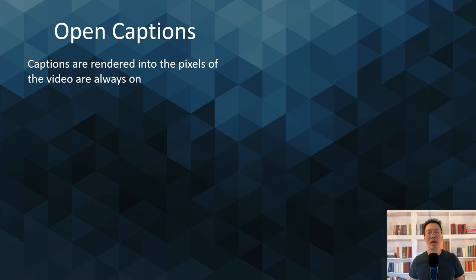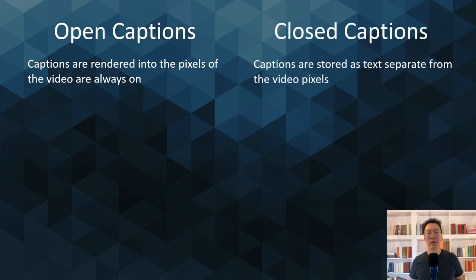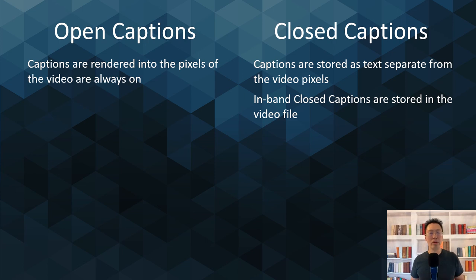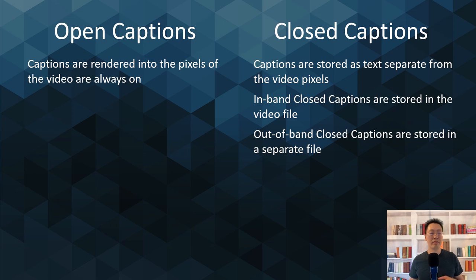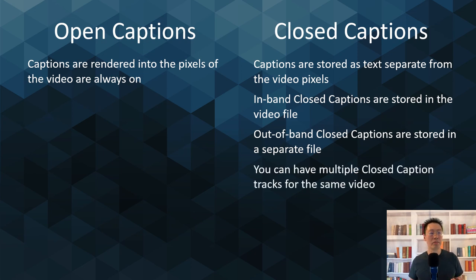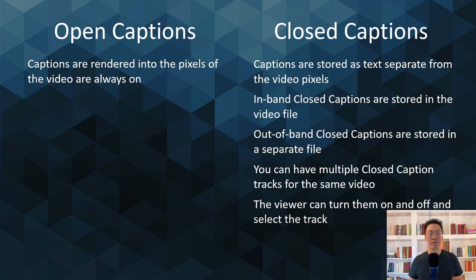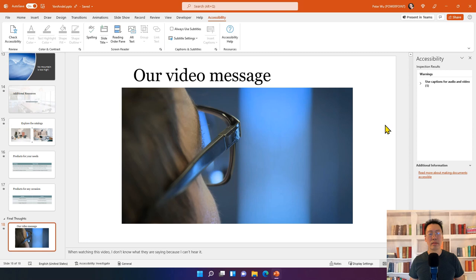Open captions are rendered into the pixels of the video so they're always on. Closed captions store text separately from video pixels — either in the video file (in-band) or in a separate file (out-of-band) — and viewers can choose whether they're on or off and which track to play. You can have multiple closed caption tracks for the same video. Open captions and in-band closed captions must be added in your video app before inserting into PowerPoint; out-of-band closed captions can be inserted into PowerPoint separately from the video.